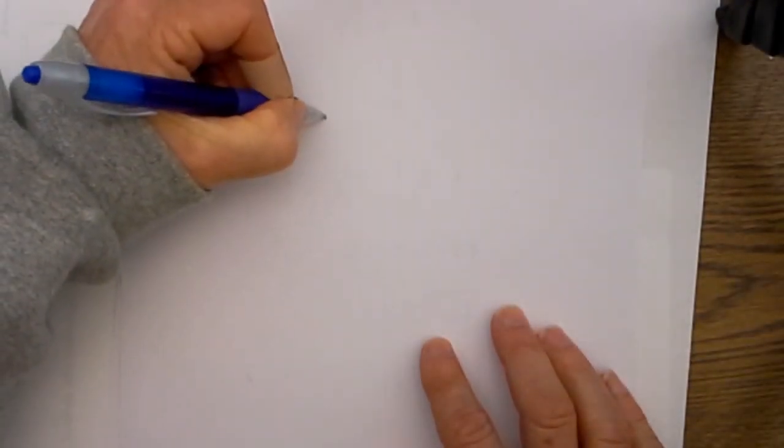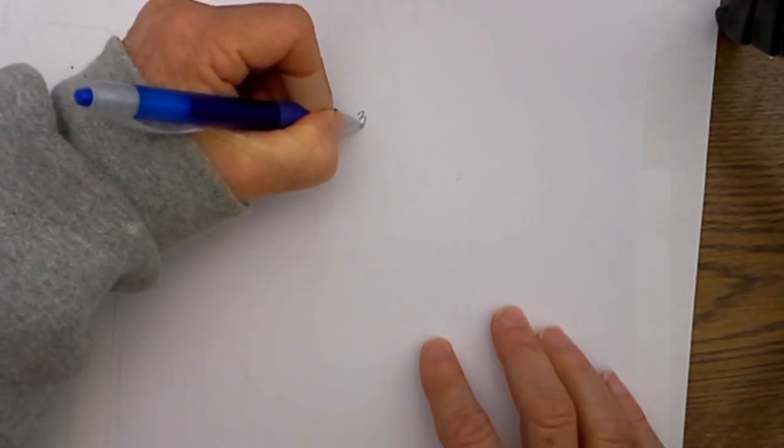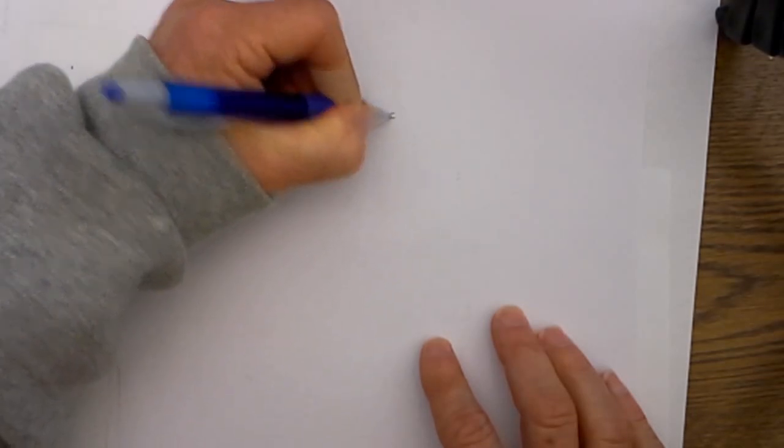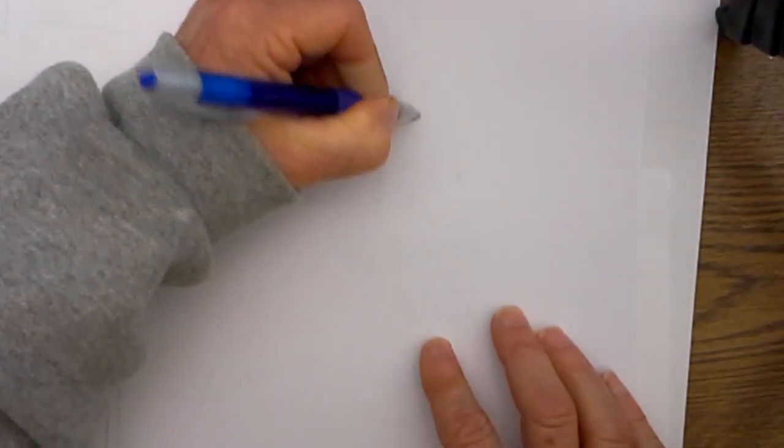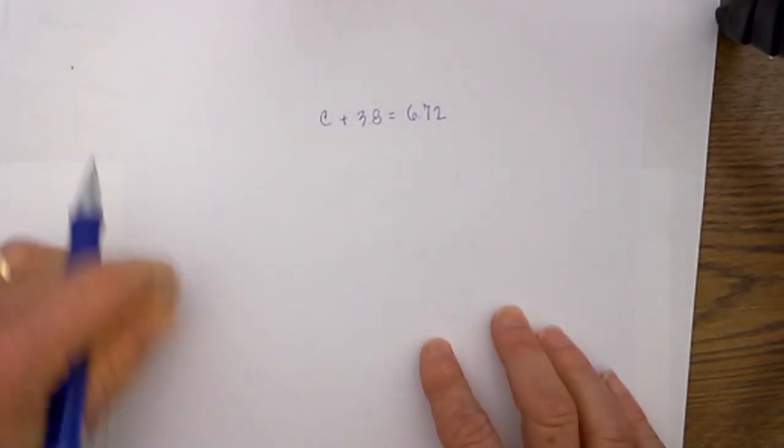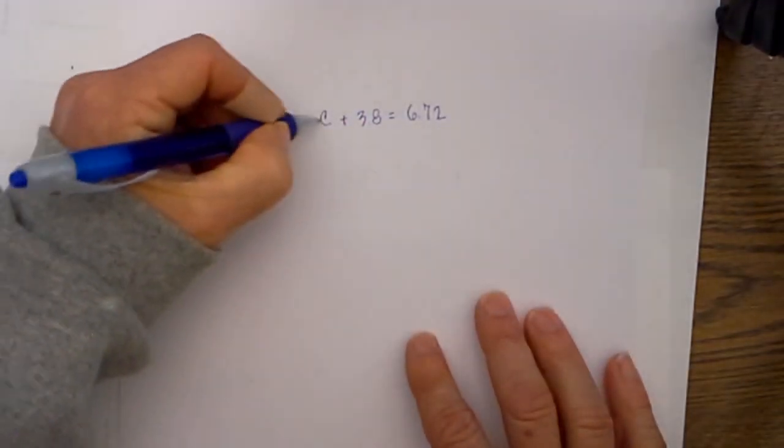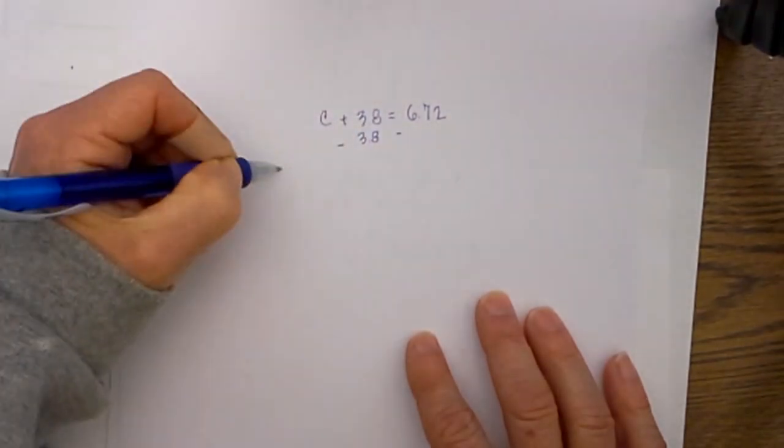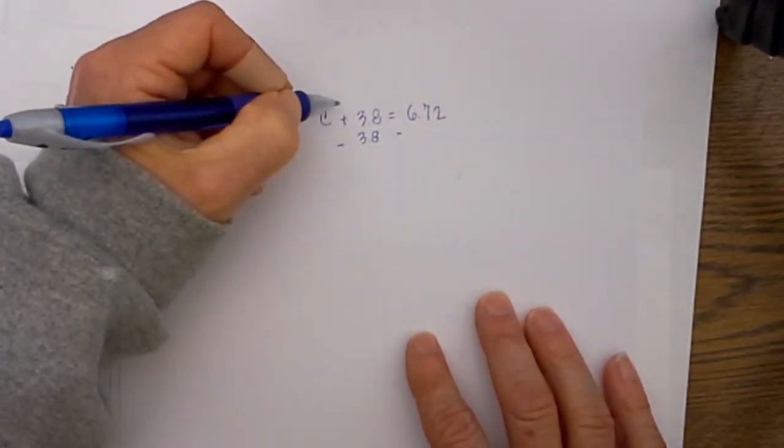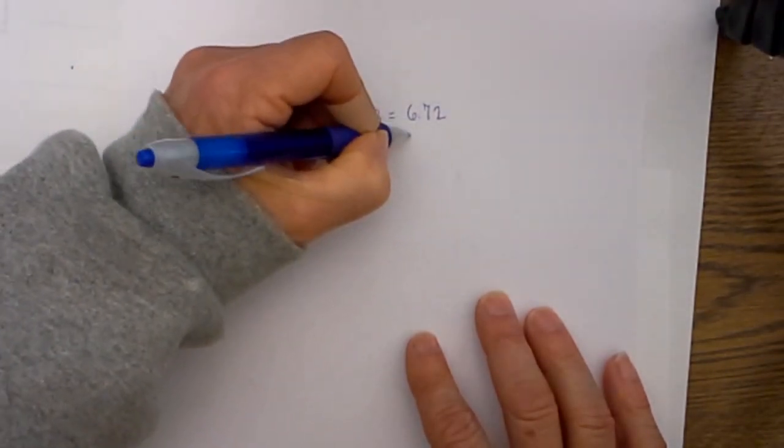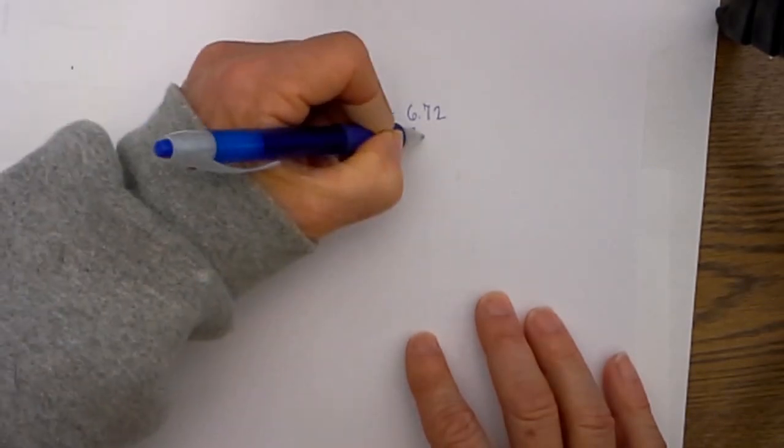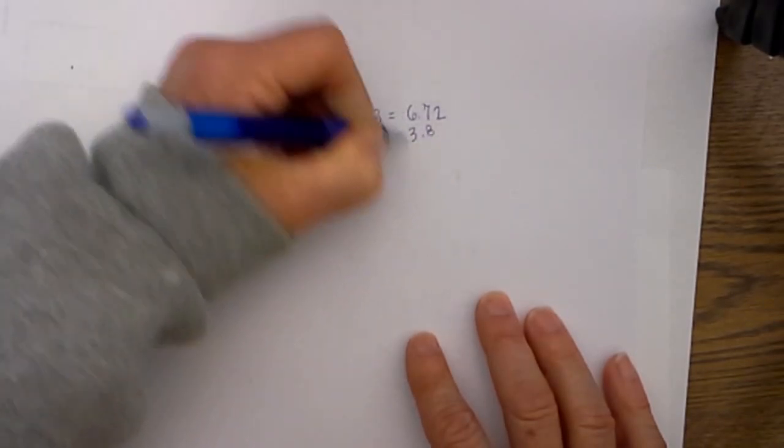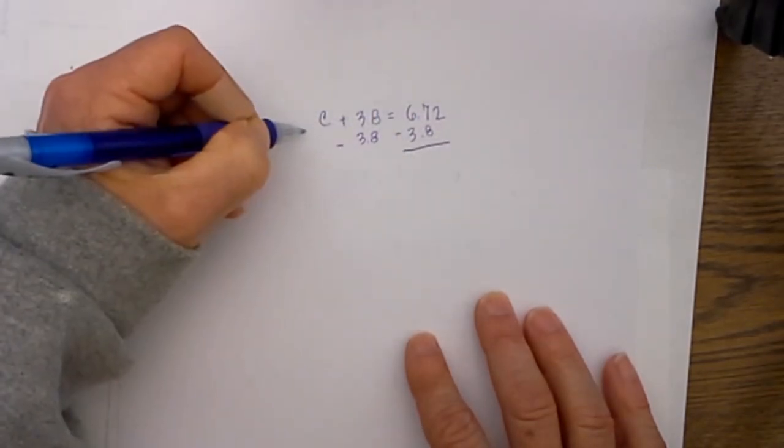Let's do one with addition. I have c plus 3.8 is equal to 6.72. In order to isolate the variable I subtract by 3.8, so I will subtract 3.8. And when you subtract and add decimals you need to make sure the decimal is lined up so it will be 3.8. I then subtract there.